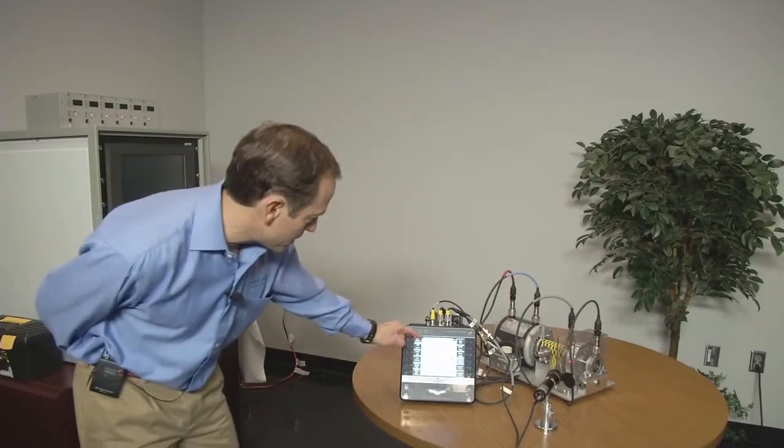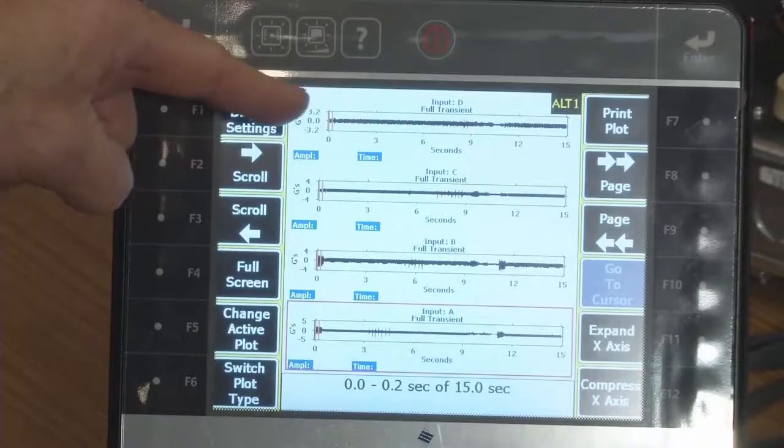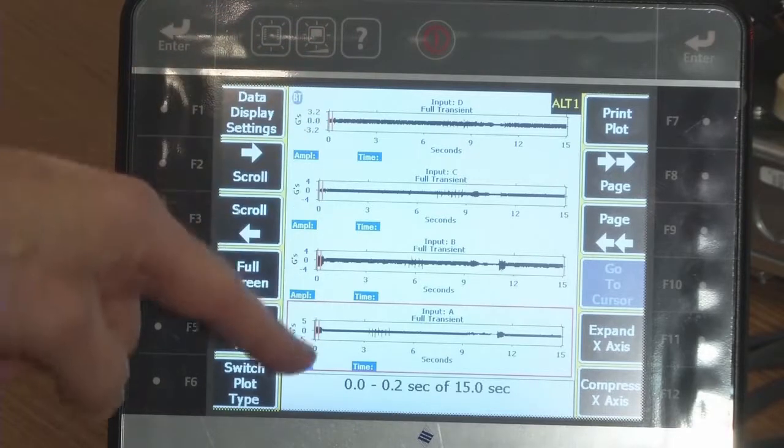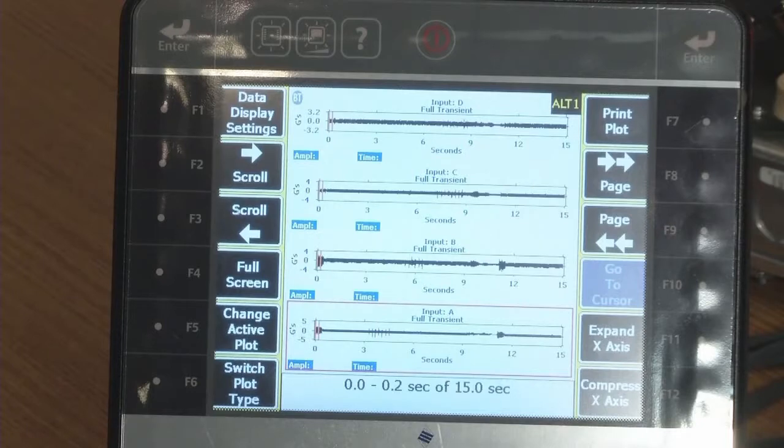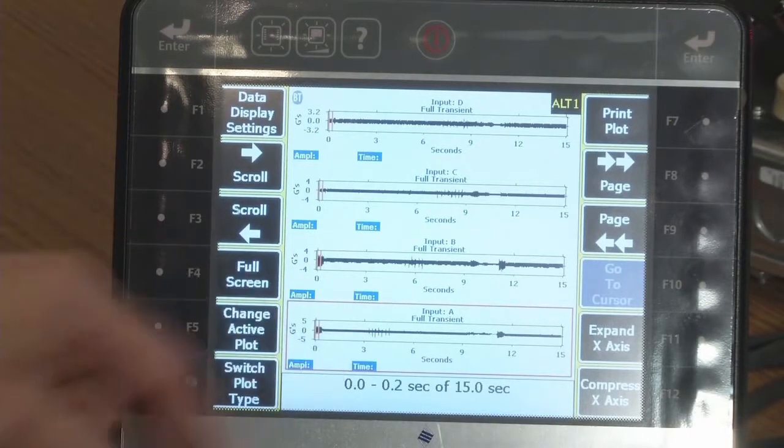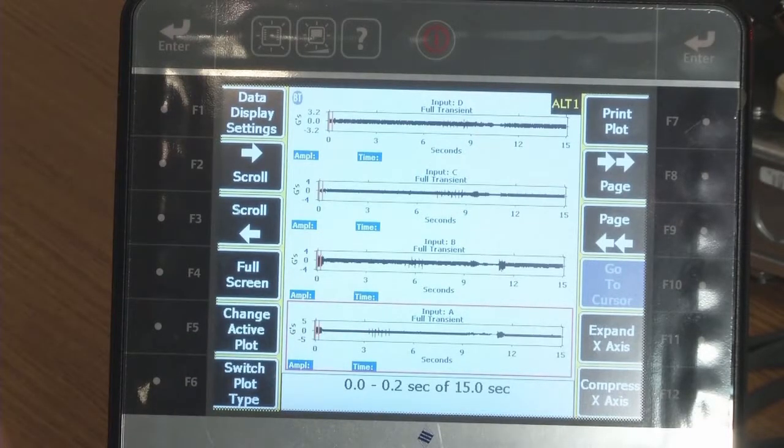And the result is, I can see all 15 seconds for each waveform. On the transient channel A, where these high peaks are, this is exactly where the impacts were. And you can see where the amplitude goes to zero, and that is where we turned the machine off and then started the machine back up again.